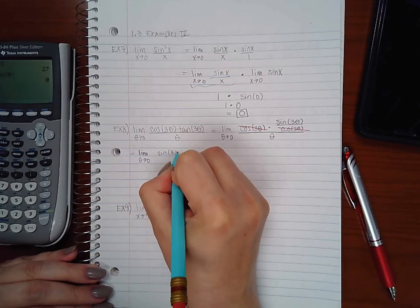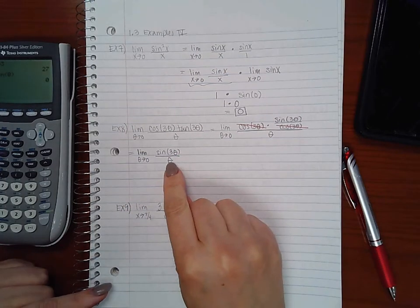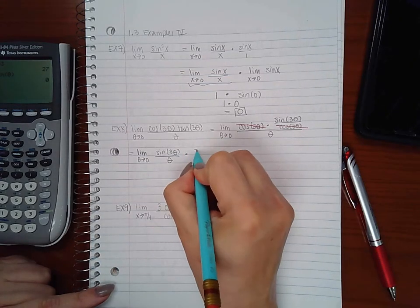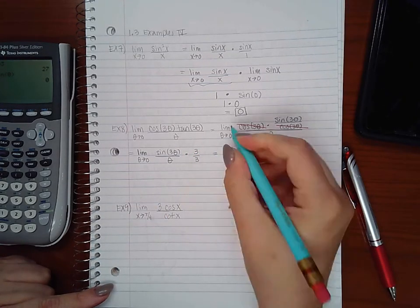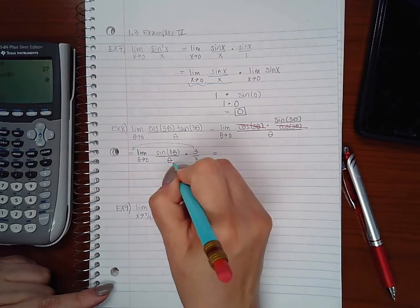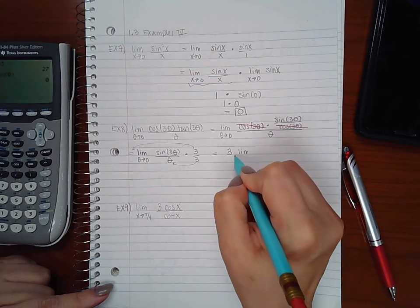Again I'm missing a 3 downstairs and a 3 here, so I'm going to multiply by 3 over 3, kick this 3 out and put this 3 in the denominator.